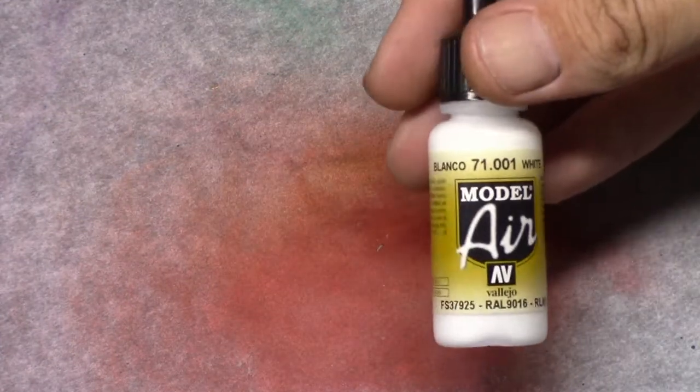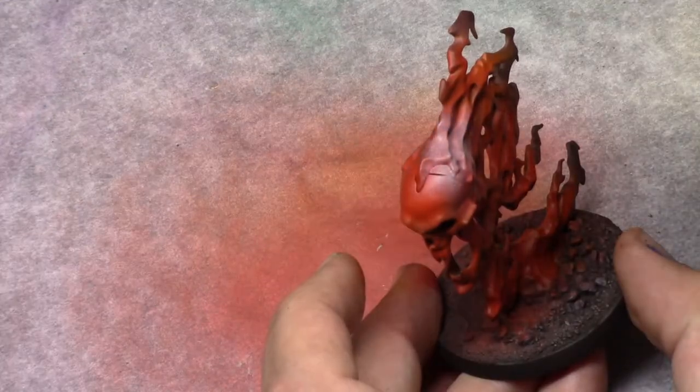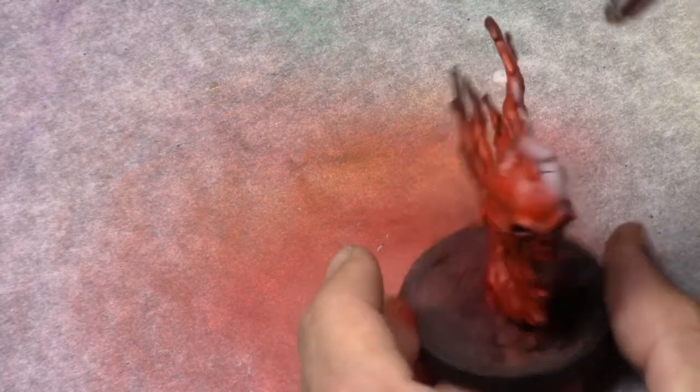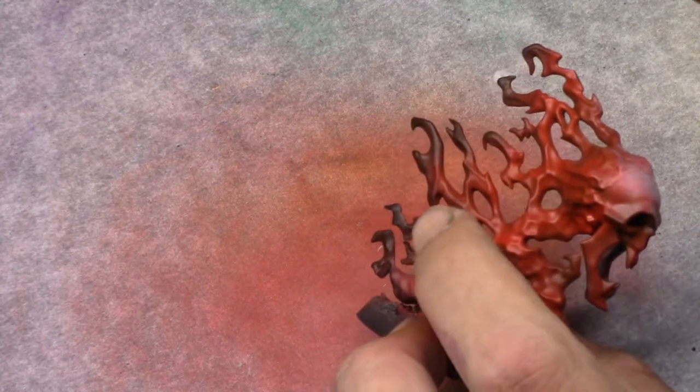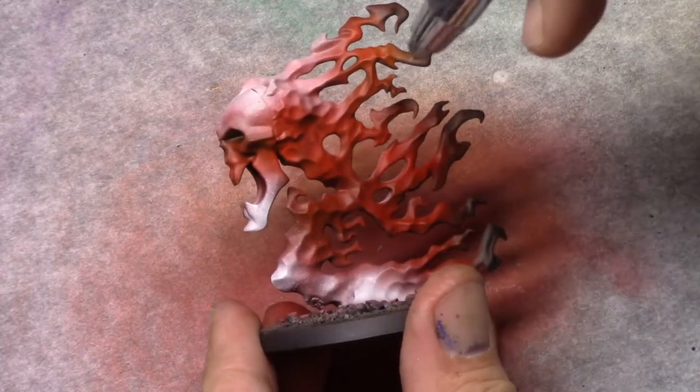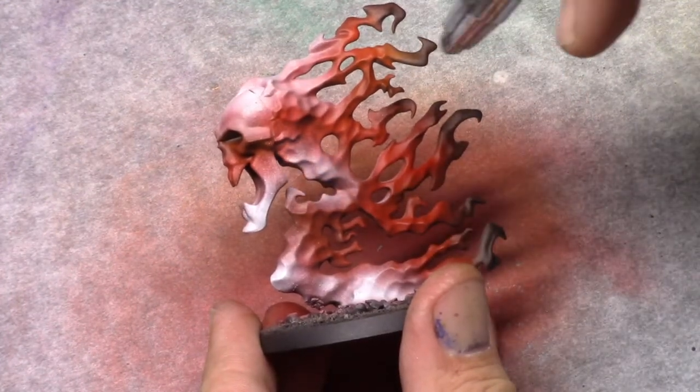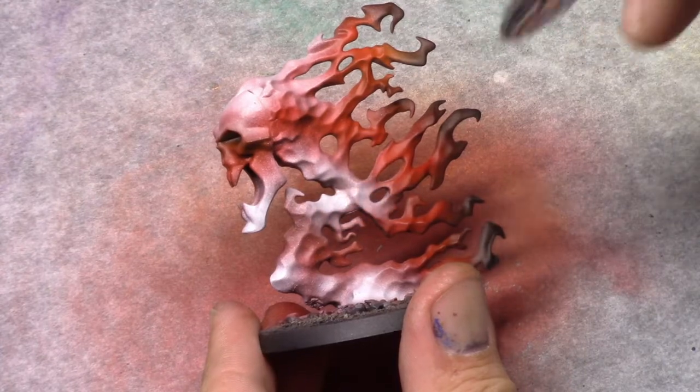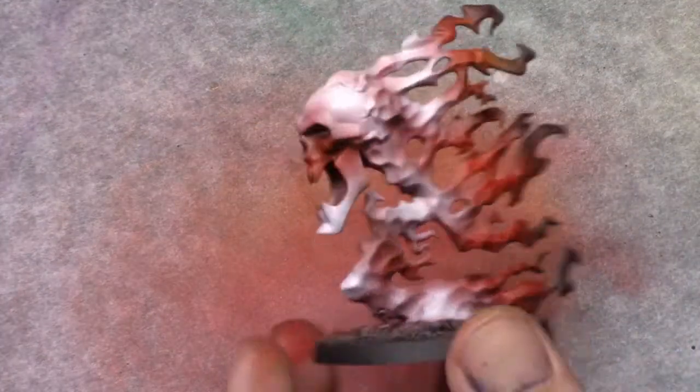Once that's done again I move to white. And now I'm going to basically apply a highlight on those orange parts. So I focus on those parts and I build up the white there. Again basically using that same pre-shading trick.